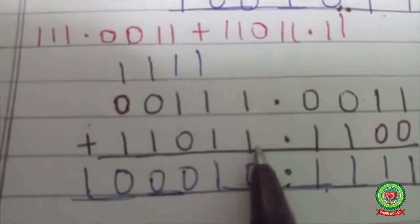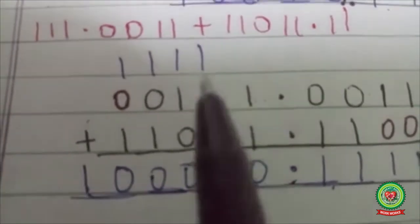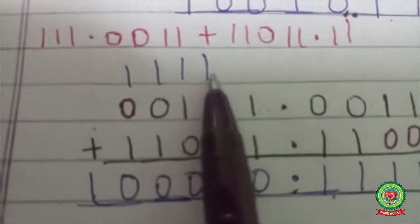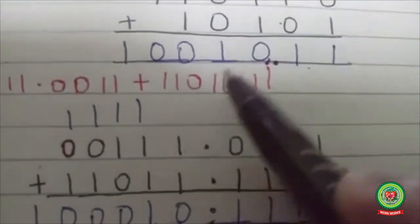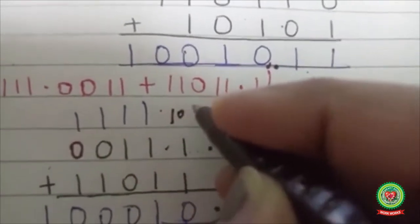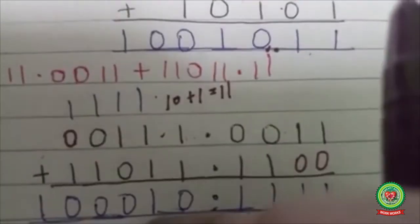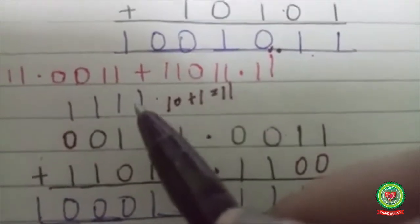1 plus 1 is 10, so 0 as the base and 1 as the carry. Now 1 plus 1 is 10, and 10 plus 1 is 11. So 1 is the base and 1 is the carry.